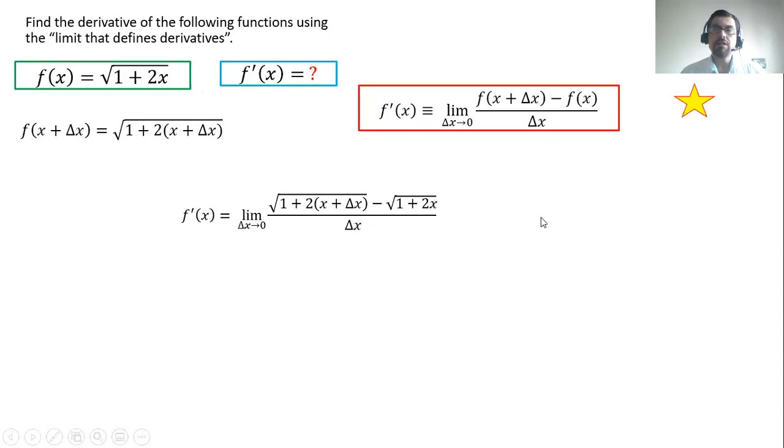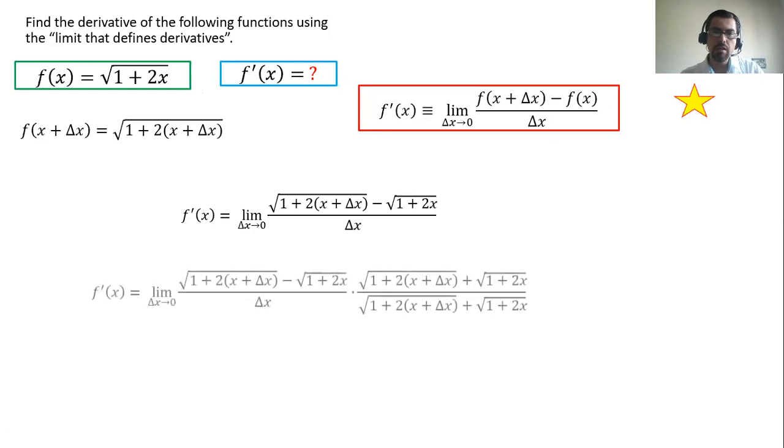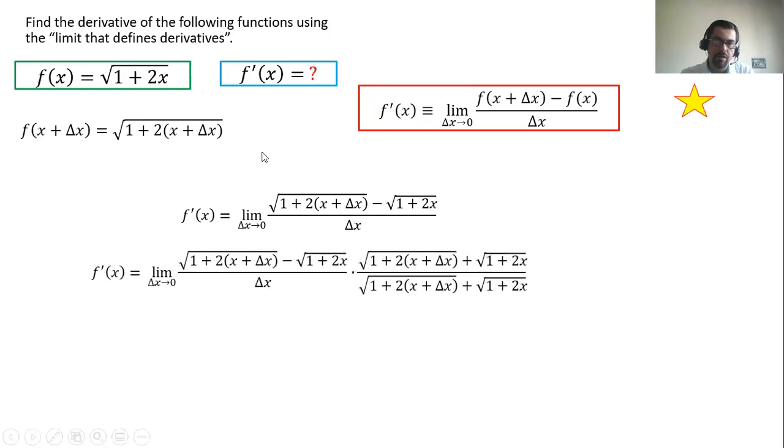Now we have to evaluate the limit. There are basically three techniques to evaluate limits: either direct substitution, or factoring, or the conjugate method. The conjugate method is the one we're going to use in this case, because we have radicals. The conjugate method looks kind of strange, but it's actually not that hard if you remember your basic algebra and are very careful in doing everything step by step.